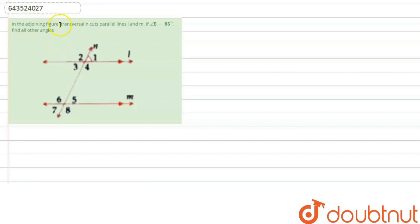In the adjoining figure, a transversal n cuts parallel lines l and m. If angle 5 equals 65 degrees, find all other angles. Let us write down what is given: l is parallel to m, n is a transversal, and angle 5 equals 65 degrees.